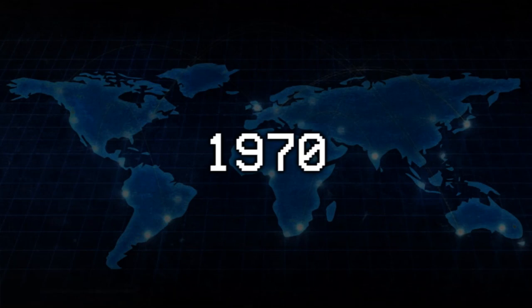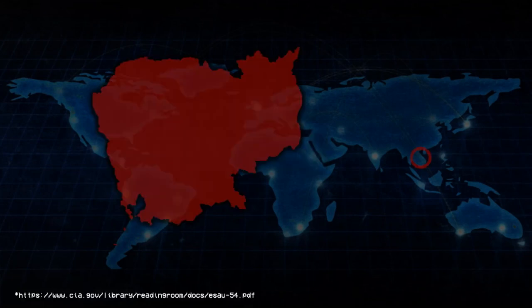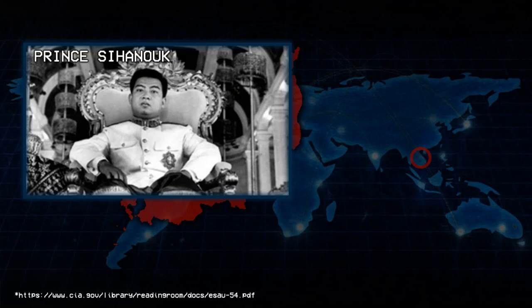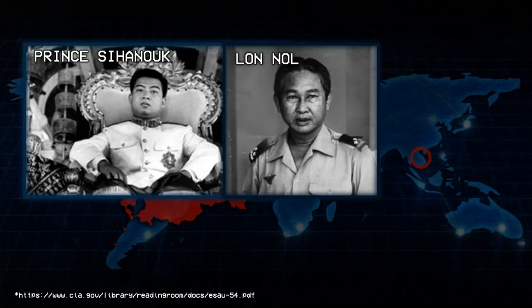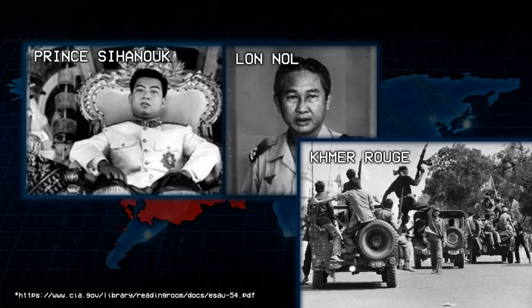1970. Cambodia. The CIA overthrows Prince Sihanouk, who is popular among Cambodians for keeping them out of the Vietnam War. He is replaced by CIA puppet Lon Nol, who immediately throws Cambodian troops into battle. This unpopular move strengthens once-minor opposition parties like the Khmer Rouge, who achieve power in 1975 and massacre millions of their own people.